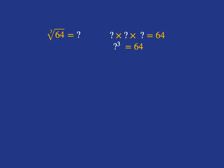In other words, what to the power of three gives you 64? Well, as we know that 4 times 4 times 4 is 64, we then know that the cube root of 64 is just 4.